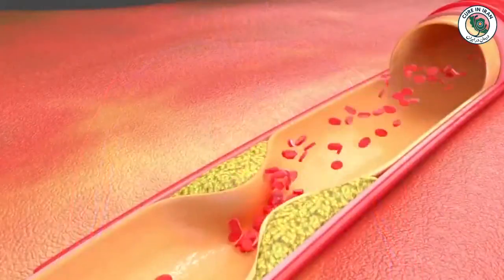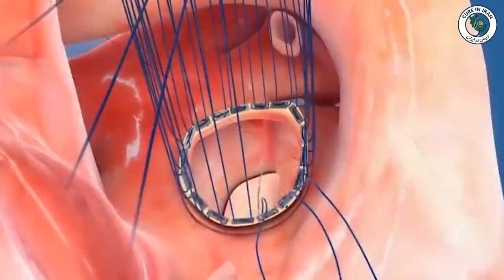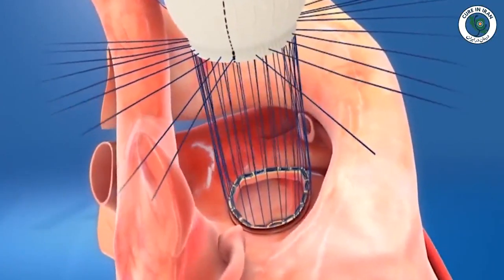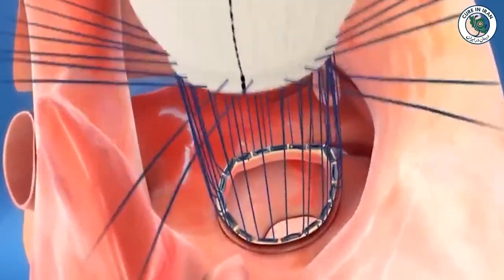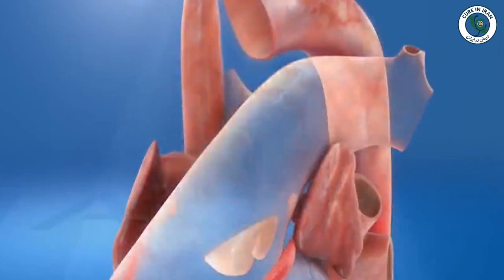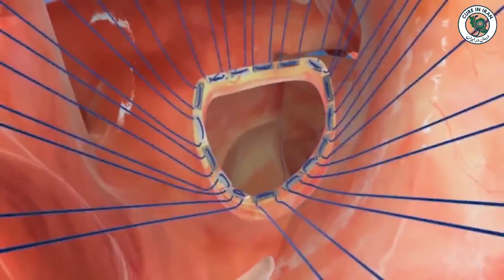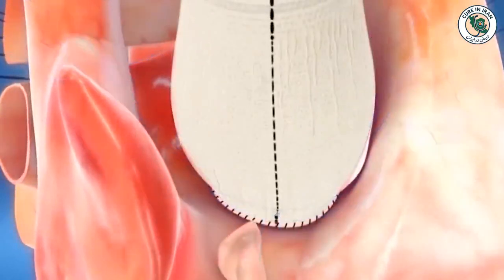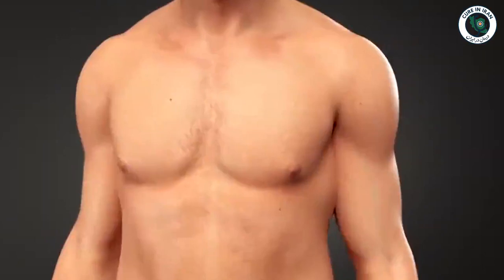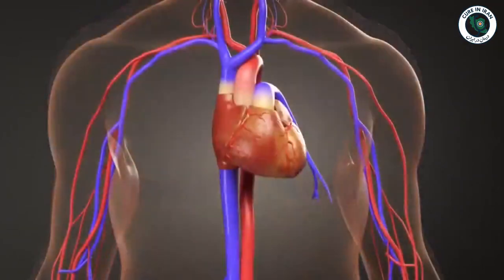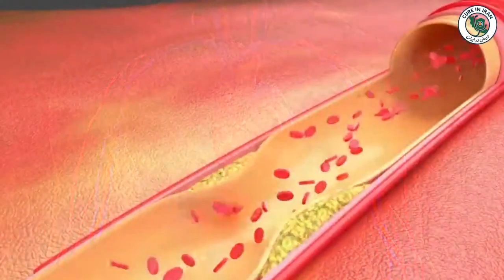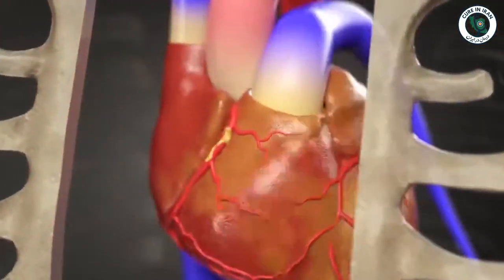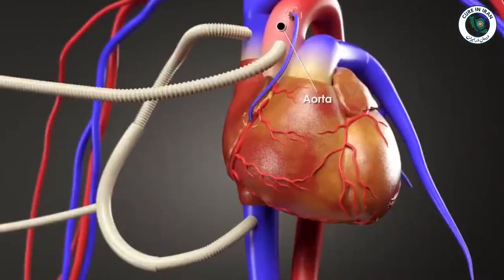Along with coronary artery stenosis, the patient underwent a complete aortic root replacement, which included the aortic valve, the aortic sinuses, and the ascending aorta. Additionally, three of the patient's coronary arteries, due to blockage and narrowing, were treated with coronary artery bypass grafting.